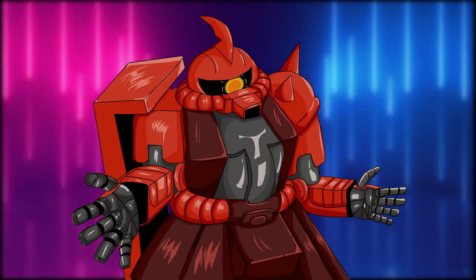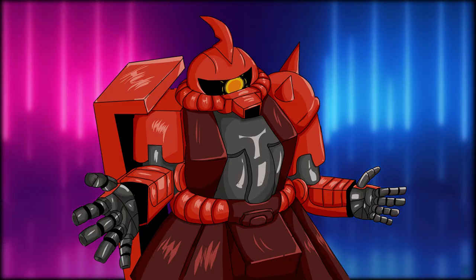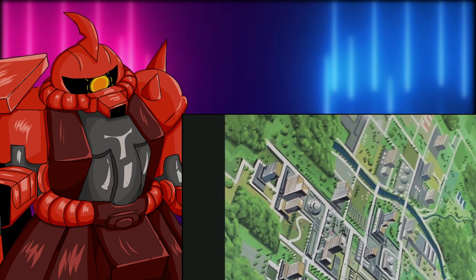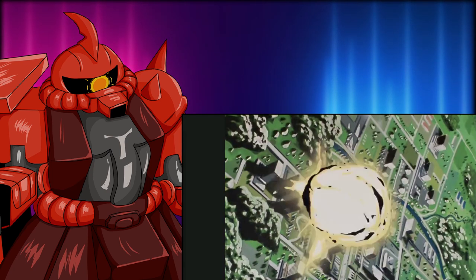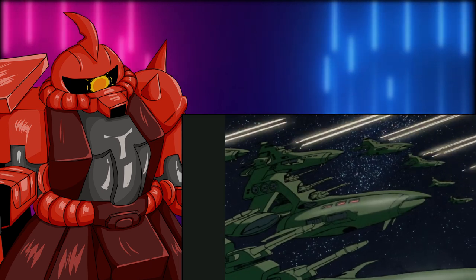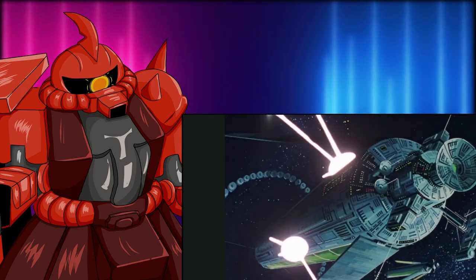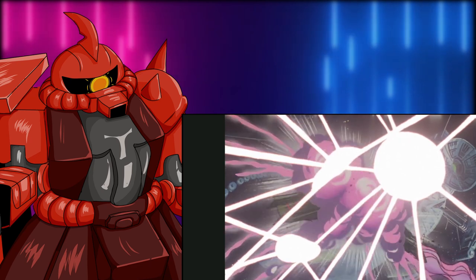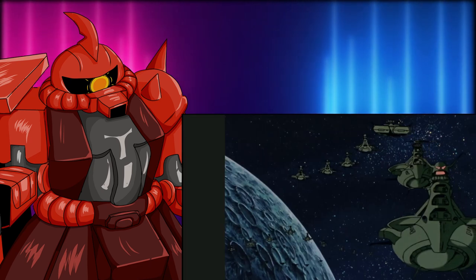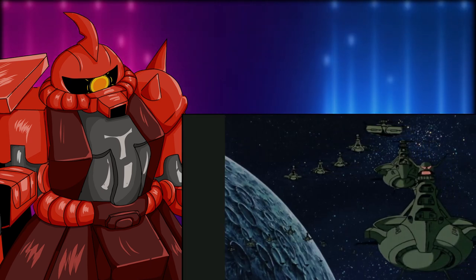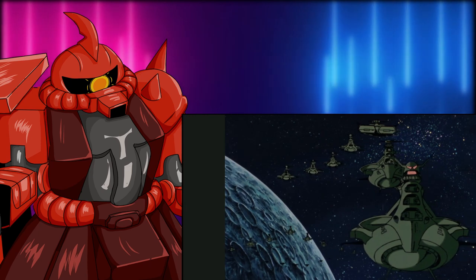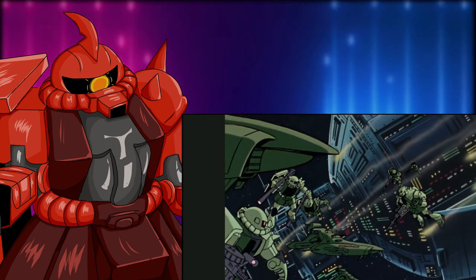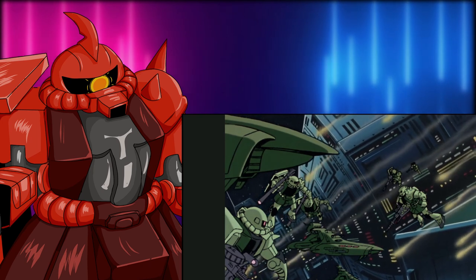The first important battle during the One Year War was the One Week Battle, launched against Sides 1, 2, and 4, merely seconds after Zeon declared war. Zeon's goal was to defeat the Earth Federation forces and use a depopulated space colony of Side 2 and drop it to Earth in hopes of destroying the Earth Federation's main headquarters at Jaburo. This plan did not work because the colony broke up upon entering Earth's atmosphere.